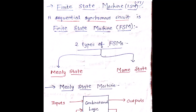So let's begin with finite state machines. What is a finite state machine? Finite state machines, called FSM, are basically a sequential synchronous circuit. By now you understand the meaning of sequential and synchronous. Sequential means wherein my output doesn't only depend upon my present input but also on my past output. Synchronous indicates that a clock is given to each and every flip-flop. Hence, a finite state machine is a sequential synchronous circuit.